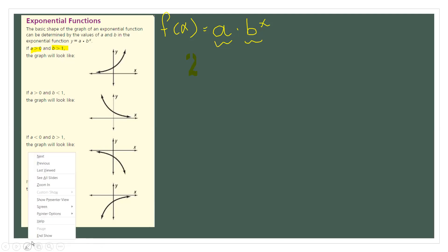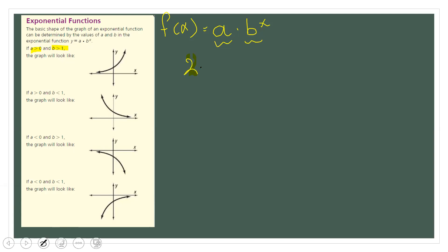As an example, take 2 times 3 raised to the power x. Here 2 is greater than zero and 3 is greater than one. When both a is greater than zero and B is greater than one, the basic shape curves upward like this.